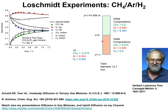Looking at the composition differences between the top and bottom halves of the Lohschmidt tube: for methane, the difference in mole fractions is minus 0.515. For argon, it is close to zero at 0.024. For hydrogen, the composition difference is plus 0.491.